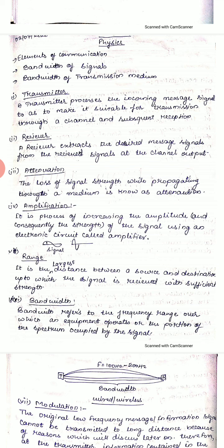Attenuation is the loss of signal strength. For example, if the signal strength starts at 50 Hz, it may be reduced to 10 Hz or 5 Hz as it travels through the medium.